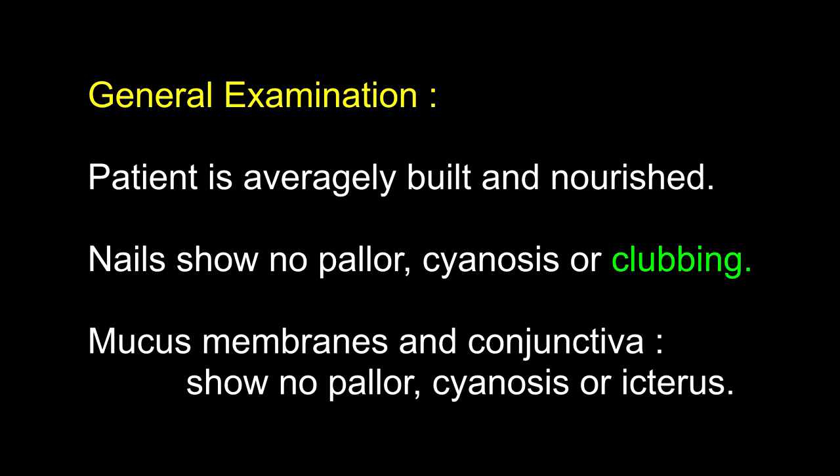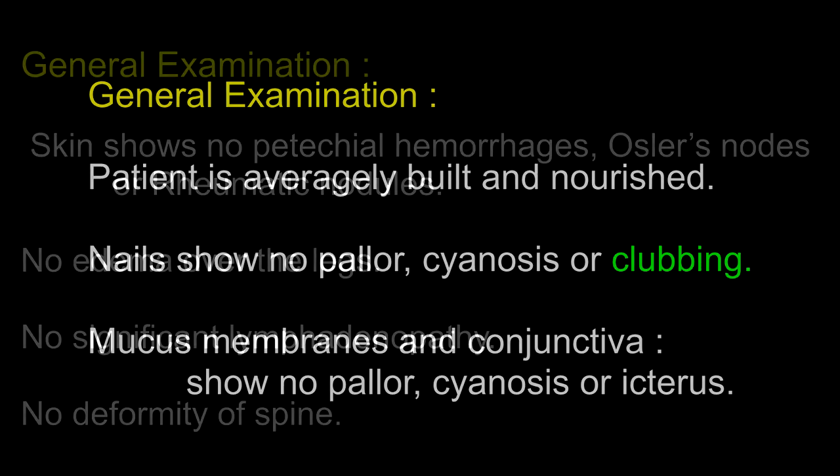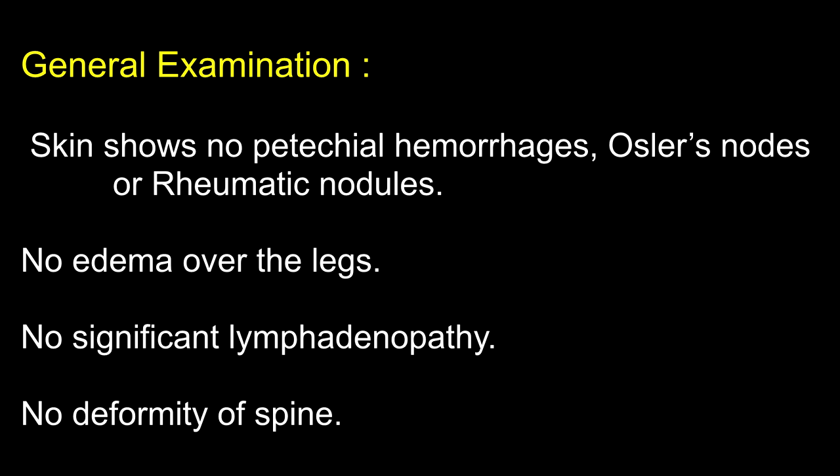Common causes of clubbing: chronic pulmonary diseases particularly suppurative like bronchiectasis and lung abscess, and neoplastic; cyanotic congenital heart diseases; cirrhosis of the cholangitic type; hereditary clubbing; rapidly growing hyperplastic type in bronchogenic carcinoma and rheumatoid arthritis; and arteriovenous fistulae in the limbs. The skin shows no petechial hemorrhages, Osler's nodes, or rheumatic nodules; no edema over the legs; no significant lymphadenopathy; no deformity of the spine.